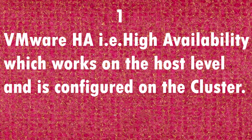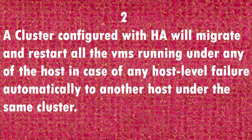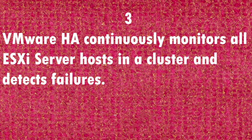VMware HA, that is High Availability, works on the host level and is configured on the cluster. A cluster configured with HA will automatically migrate and restart all VMs running on any host in case of a host-level failure to another host under the same cluster. VMware HA continuously monitors all ESXi hosts in a cluster and detects failures.